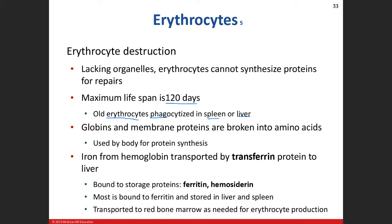One of the first things that happens when red blood cells are destroyed is that the spleen or liver takes iron out of the hemoglobin. We transport that iron to the liver, but we can't just have it floating freely in blood vessels — we attach a transport protein called transferrin, which carries the iron to the liver where it's saved as an ingredient for making more red blood cells.